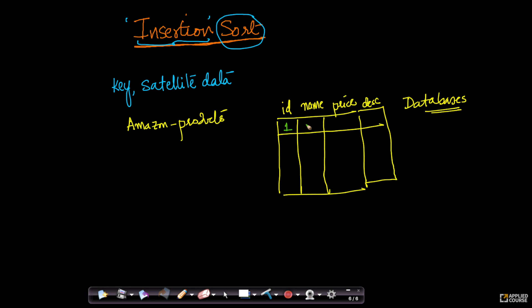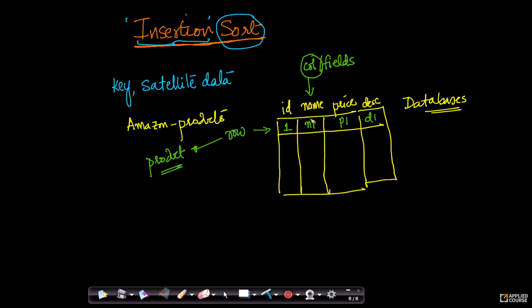For example, I could have ID 1 where the product name is N1, the price is P1, and there is some description D1. Each row in this table represents information about one product. Each column — also called a field — represents one aspect of a product. So each row represents one unique product, and each column represents one aspect, maybe its name, price, or description. Similarly, I could have product ID 2, whose name is N2, price is P2, description is D2, and so on.